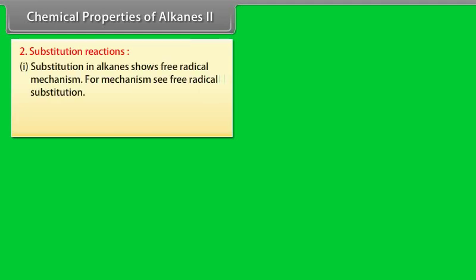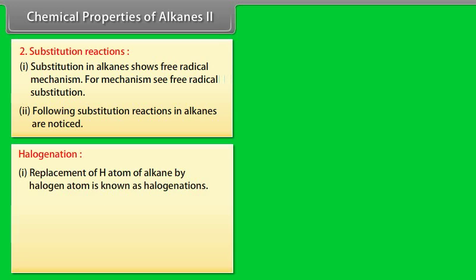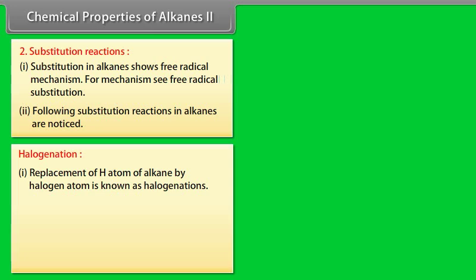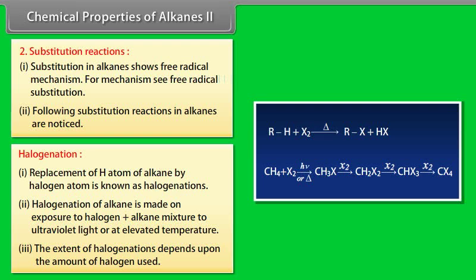Substitution reactions: 1. Substitution in alkanes shows free radical mechanism. 2. Following substitution reactions in alkanes are noticed: Halogenation: 1. Replacement of hydrogen atom of alkane by halogen atom is known as halogenation. 2. Halogenation of alkane is made on exposure to halogen plus alkane mixture to ultraviolet light or at elevated temperature. 3. The extent of halogenation depends upon the amount of halogen used.